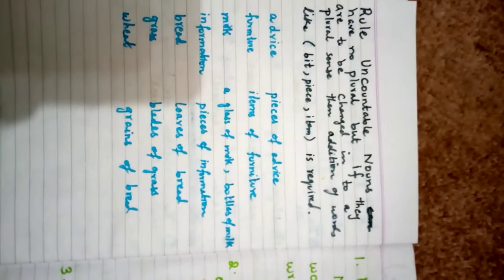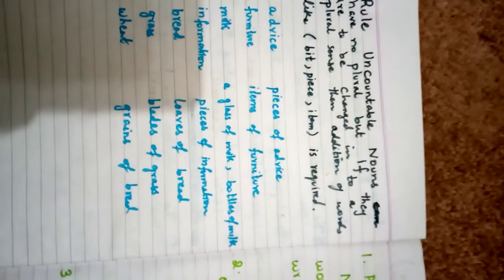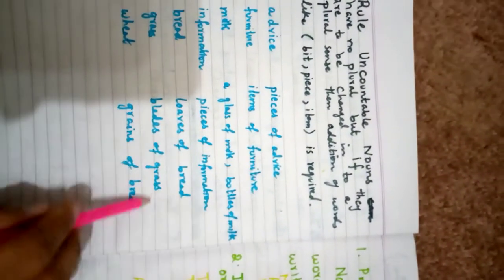He ate many breads - this is wrong. He ate many loaves of bread. Grass: there are many blades of grass. Grasses is wrong. Wheats is wrong. There are many grains of wheat - wheat in the sack, grains of wheat.